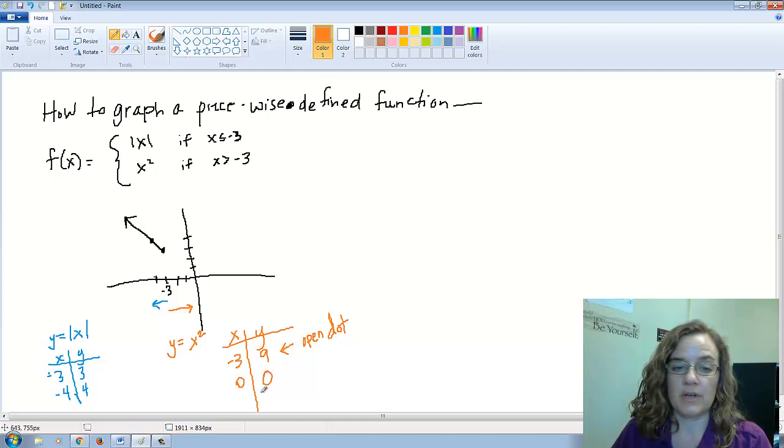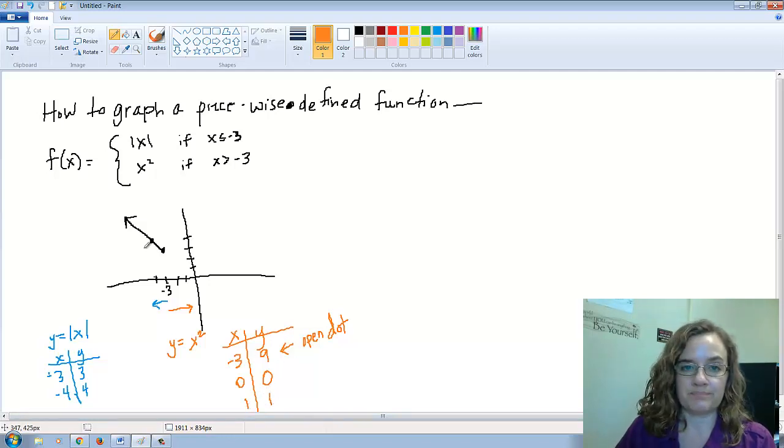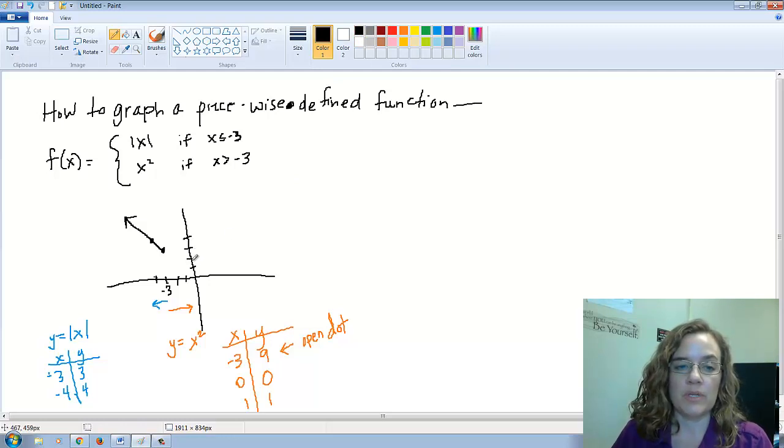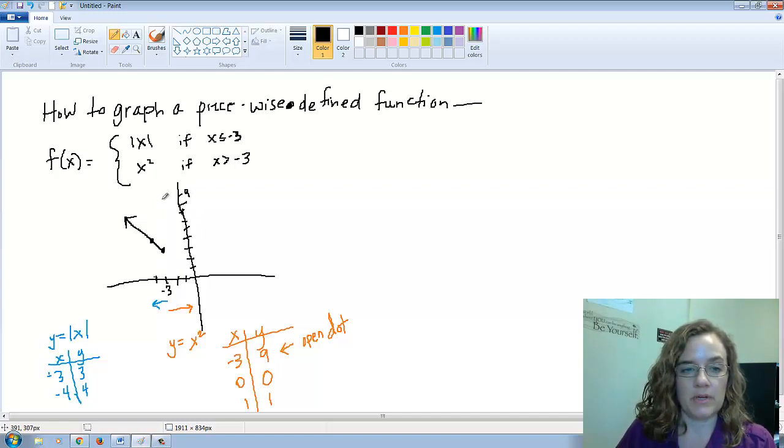If I am doing another point, let's say another one would be at 0: 0 squared is going to be 0. If I put in 1, I'm going to be at 1.